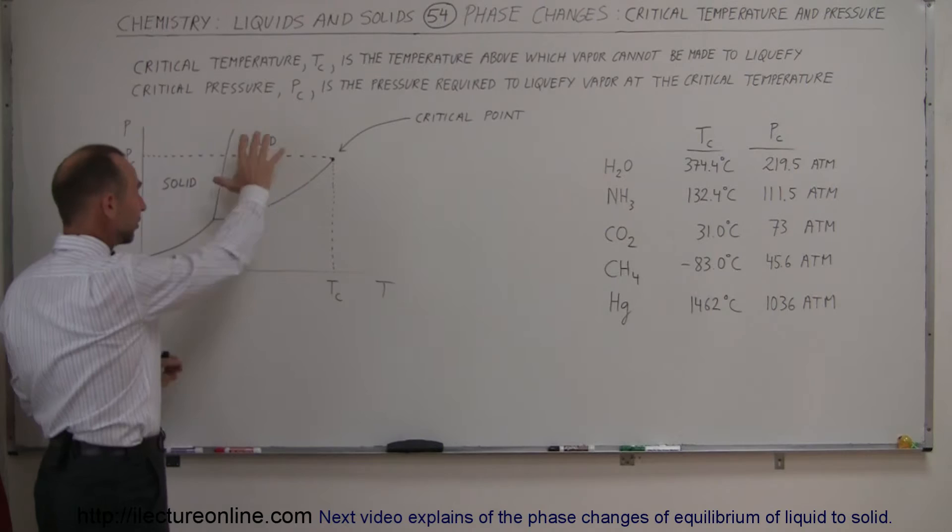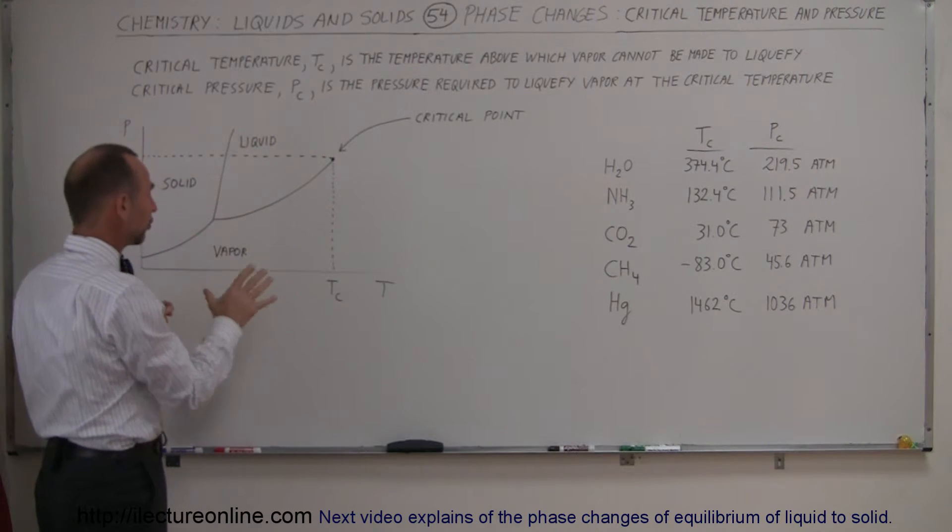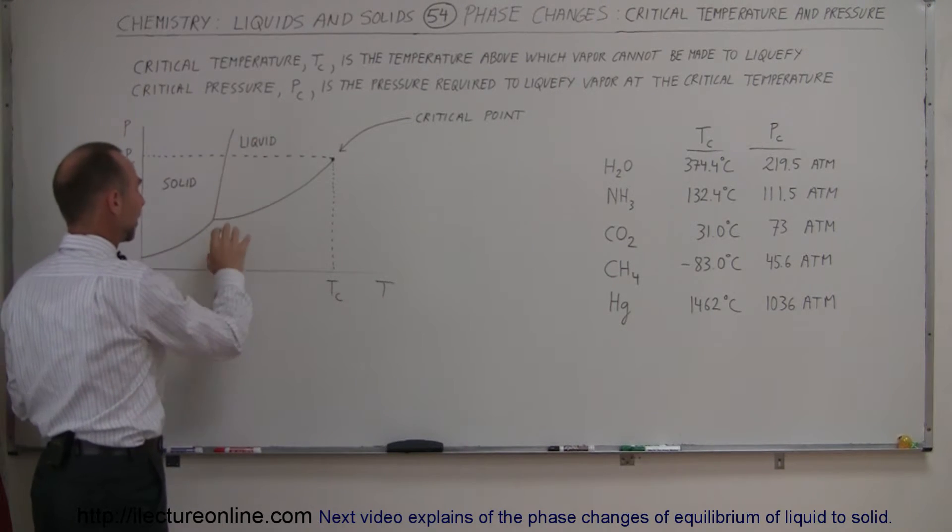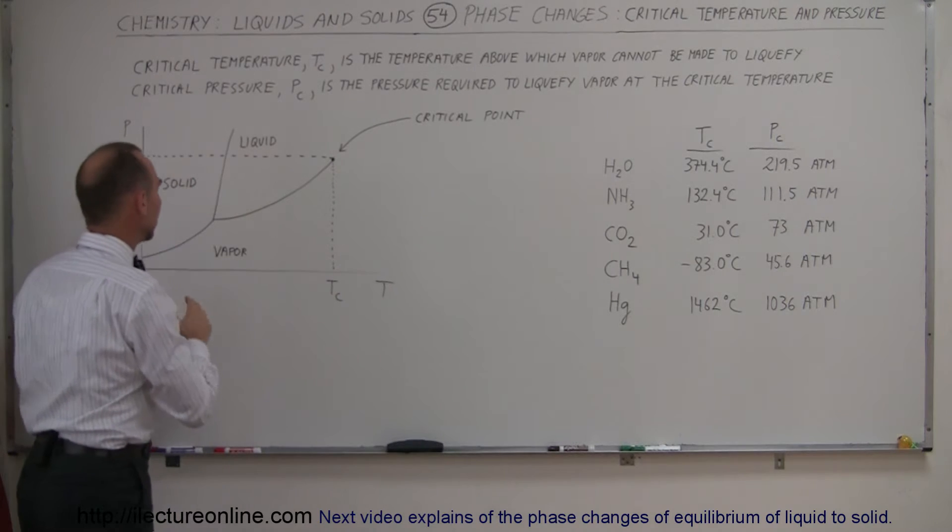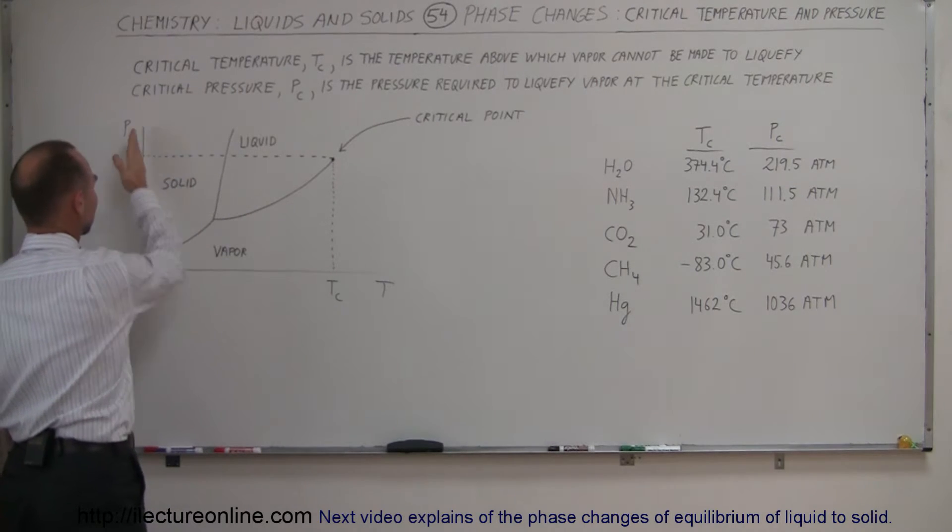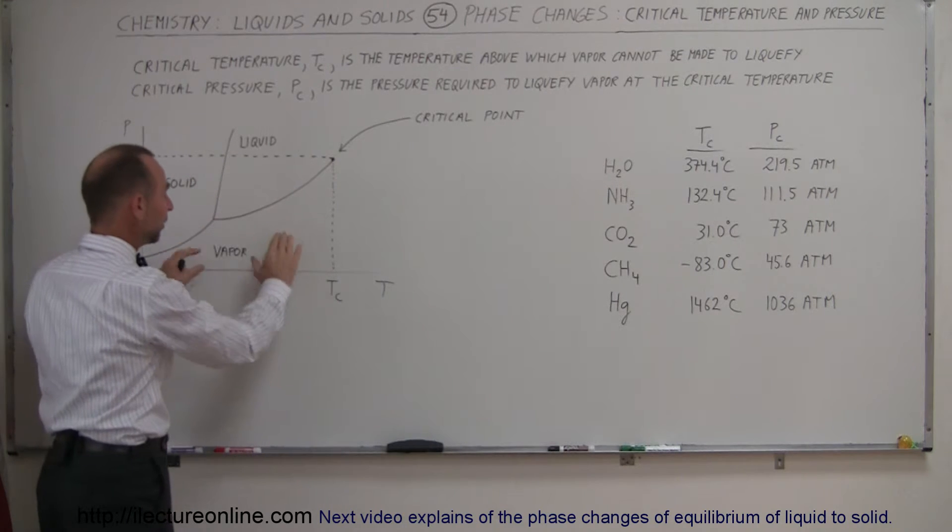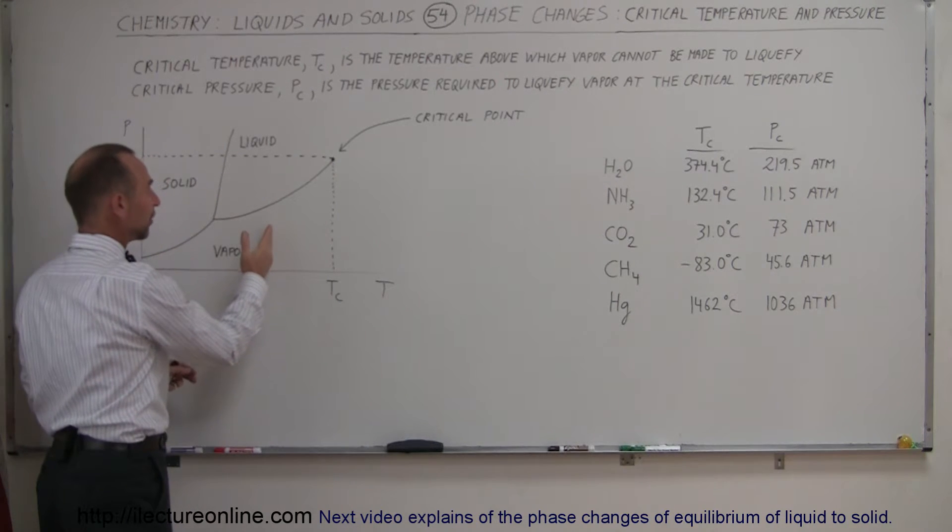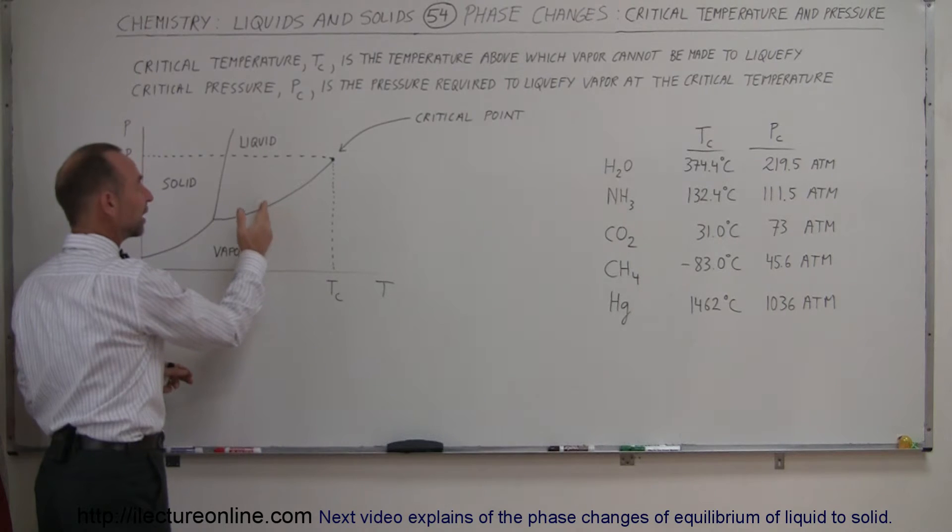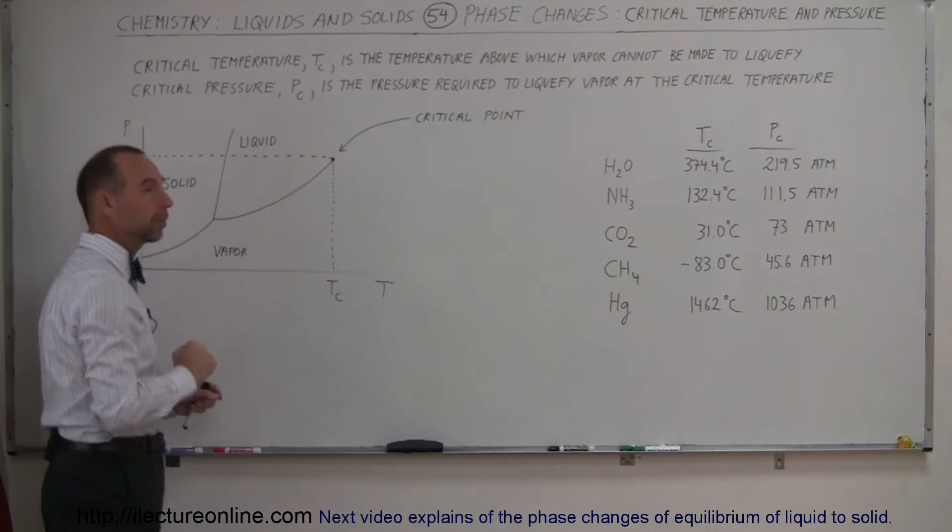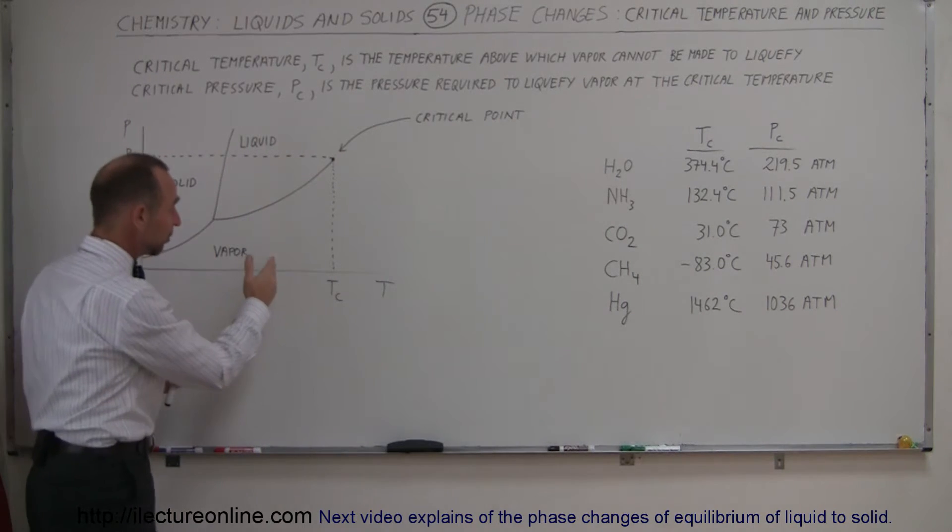And this phase diagram shows the three different phases of any substance. We have vapor, liquid, and solid. Notice that we have pressure on the vertical axis and temperature on the horizontal axis. And what this implies is that we have a vapor. However, if we apply enough pressure to it, if we increase the pressure on the vapor, eventually it will go through a phase change and turn into a liquid at a particular temperature.